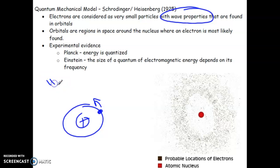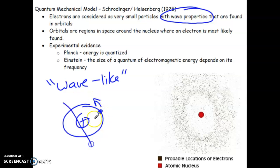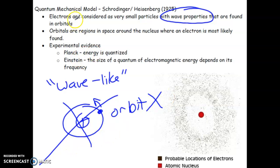Sometimes you'll see electrons referred to as wave-like particles — they behave as if they're energy, but they really are a piece of mass. The space where we find an electron is still called an energy level, but it is no longer called an orbit. The orbit is a thing of the past.